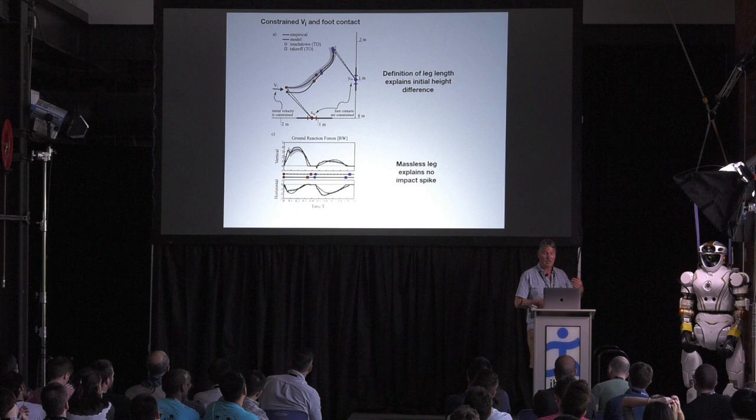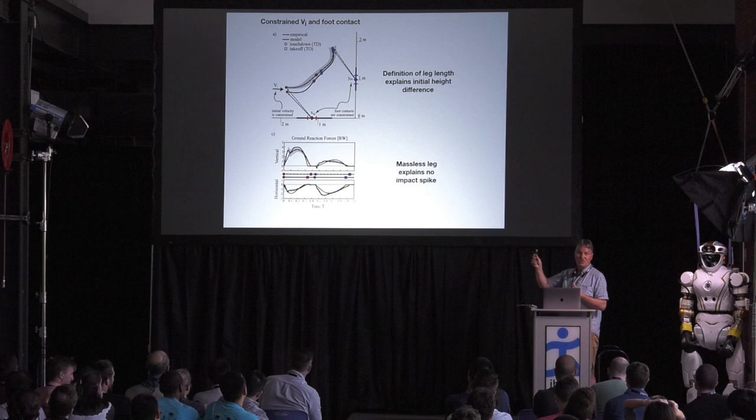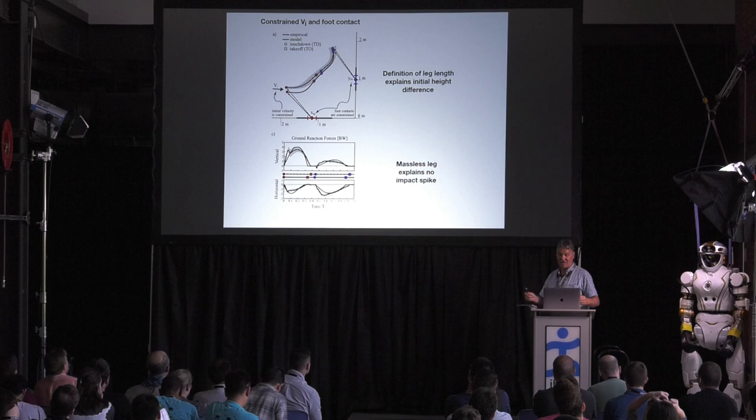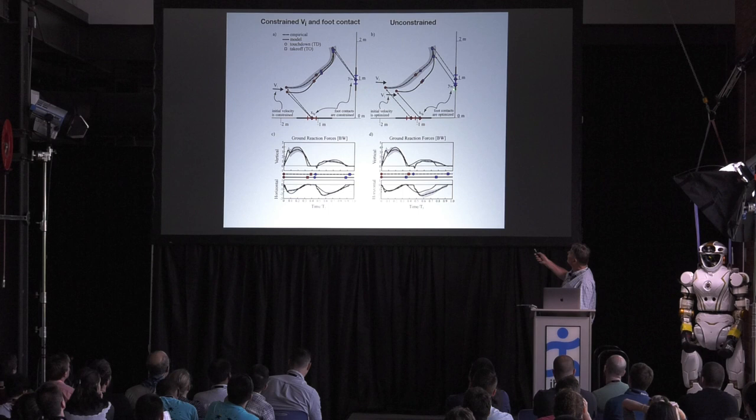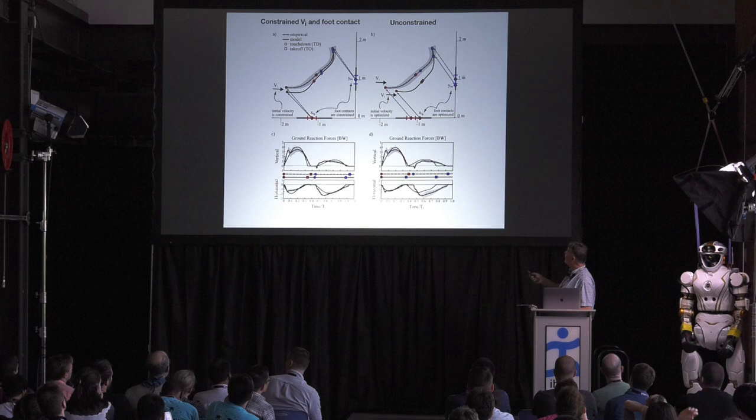But we elected not to account for that because again, our objective is not to match these trajectories exactly, but have a model that's doing dynamically what these people are doing so that then we can take the model apart. So this is constrained initial velocity and the contact points. If we take away those constraints, then the model accepts that it has its leg length challenged and just deals with it, but it does it in the same way that the individual does.